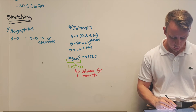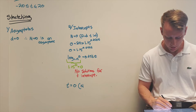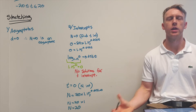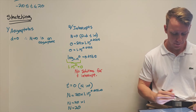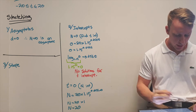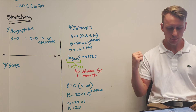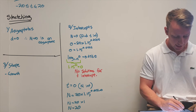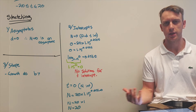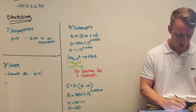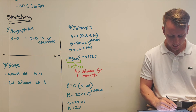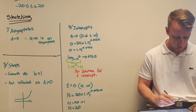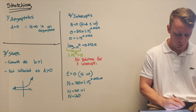The n-intercept is n equals 20, which we already knew from part a. For shape: the function has growth because b is greater than 1 and the index is positive, and it is not reflected since both a and b are positive. So the graph shoots up with long-term growth and asymptotes off at zero.